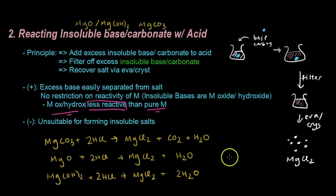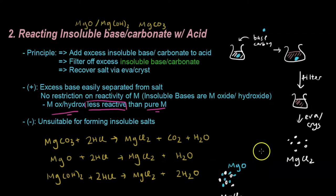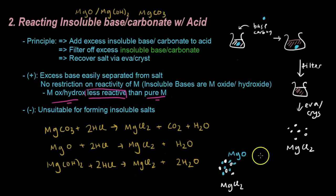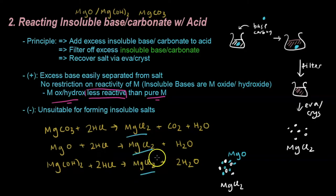The disadvantage of this method is the same as the previous one: it's unsuitable for forming insoluble salts, because it's hard to separate the salt from the excess base or carbonate — like salt and pepper again. Here is a recap: magnesium carbonate reacting with acid gives you salt, CO₂, and water; magnesium oxide with acid gives salt and water; magnesium hydroxide with acid gives salt and water.